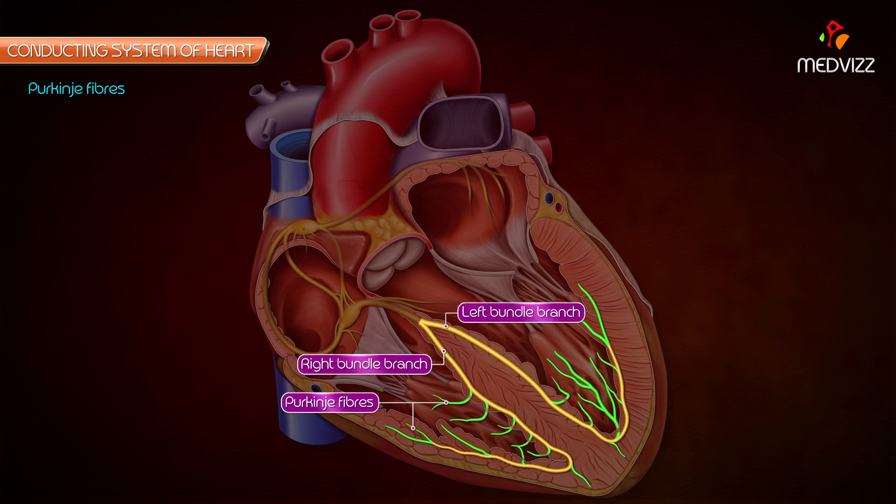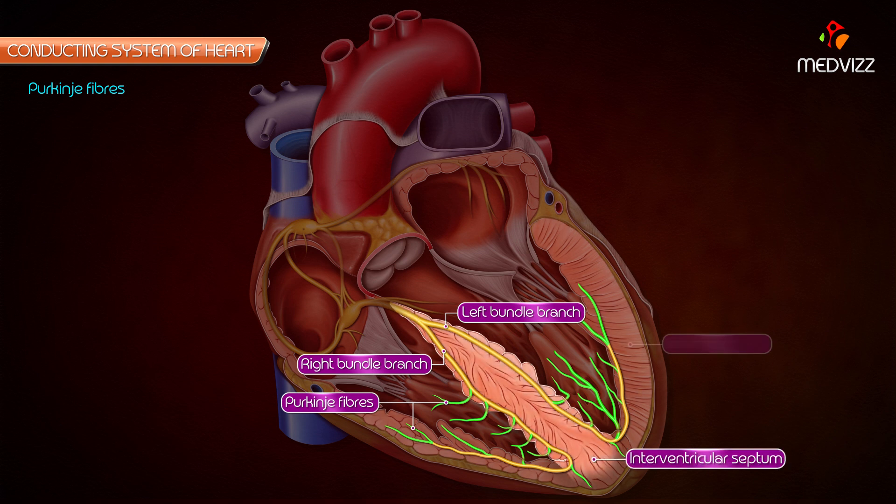Purkinje fibers are the terminal branches of the right and left branches of the bundle of His, and spread subendocardially over the septum and the rest of the ventricular wall.